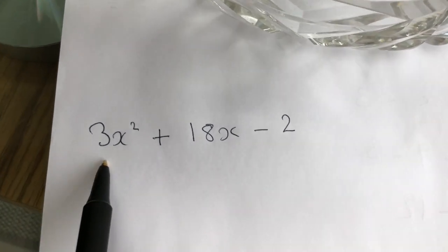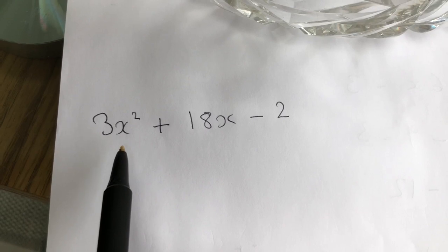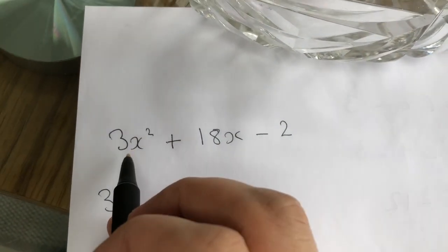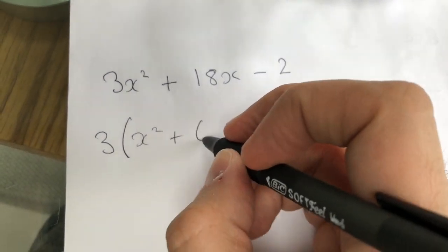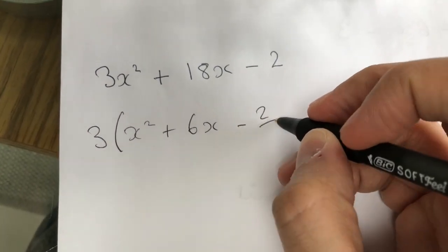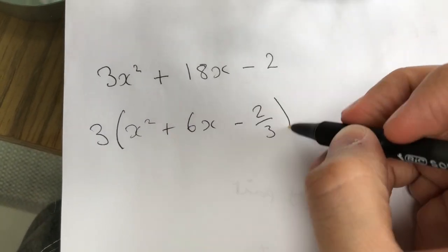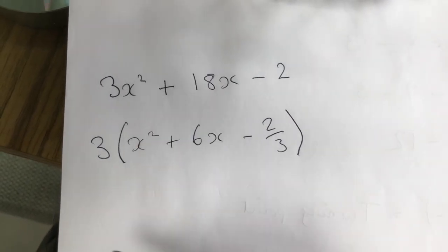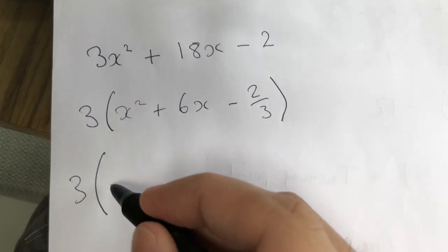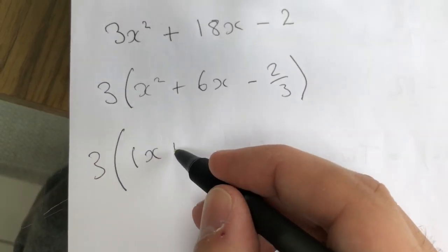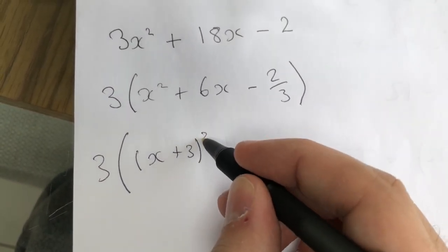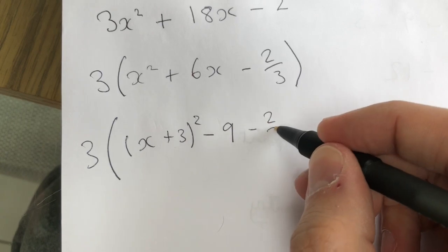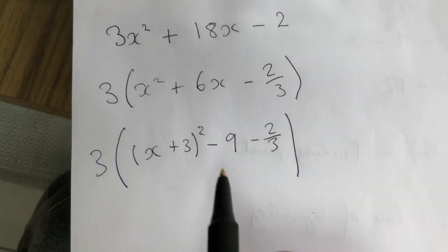Let's work through this one. We've got 3x squared, so we know we can't do it right now. First thing we're going to do is take 3 out of everything. So 3 on the outside, which leaves us with x squared plus 6x minus 2 thirds. We always prefer fractions to decimals — they're just easier to deal with. So once we've got this, we can complete the square. Keep the 3 on the outside with a big bracket. Then let's times this 3 back in.